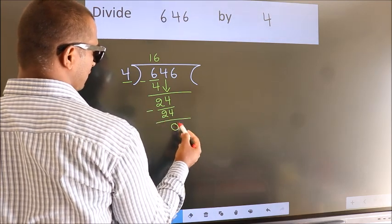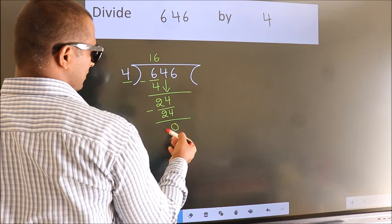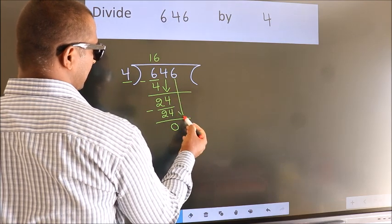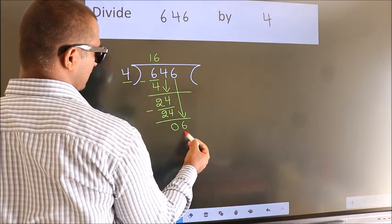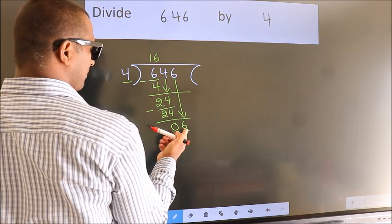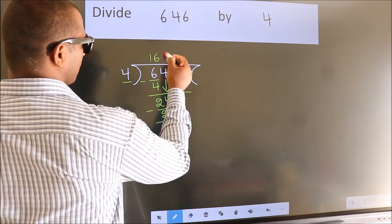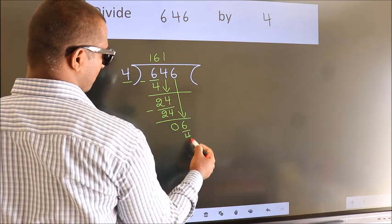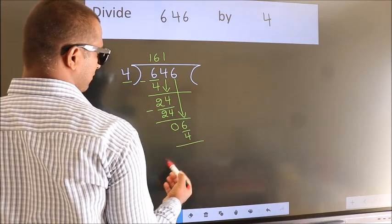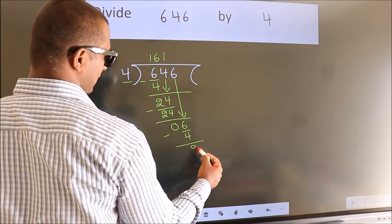After this, bring down the next number. So, 6 down. So, 6. A number close to 6 in the 4 table is 4 once 4. Now we subtract. We get 2.